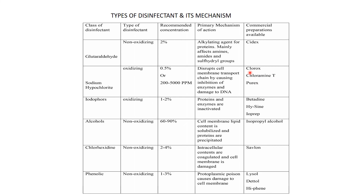Iodophores are oxidizing; one to two percent concentration is used. They deactivate proteins and enzymes. Betadine is the most commonly used example — it's the antiseptic we use widely. Alcohols are non-oxidizing, used at 60 to 90 percent concentration. They solubilize cell membrane lipid content and precipitate proteins. Isopropyl alcohol is the most commonly used.